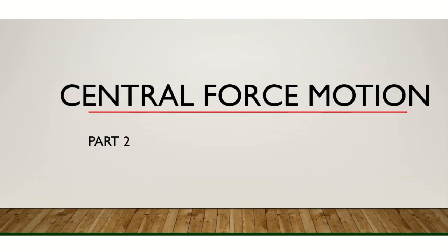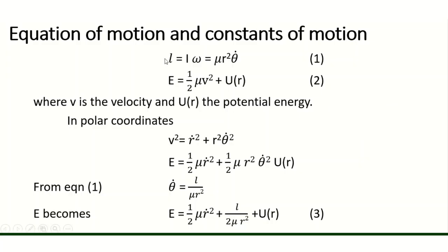Now we are going to solve the problem of central force motion, where L is equal to mu r squared theta dot — equation number 1 — and E is the total energy. In polar coordinate system, v squared is equal to r dot squared plus r squared theta dot squared.